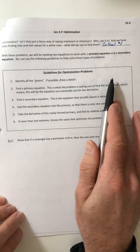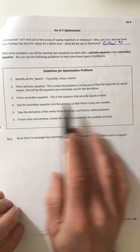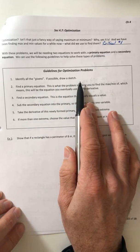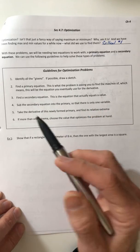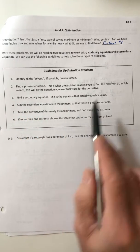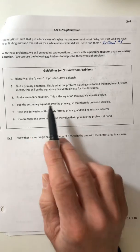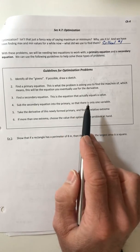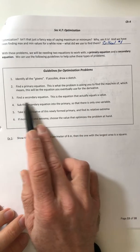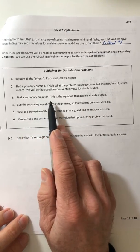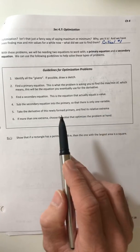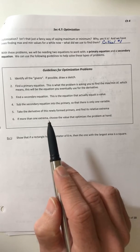Here are your guidelines to follow. One, identify all the givens and if possible draw a sketch so you can see it. Two, find the primary equation. This is what the problem wants you to find the maximum of, which means this is the equation you're eventually going to use for the derivative. Three, find a secondary equation. That's usually what equals a value, like what's set equal to 50 feet or 12 cubic centimeters.